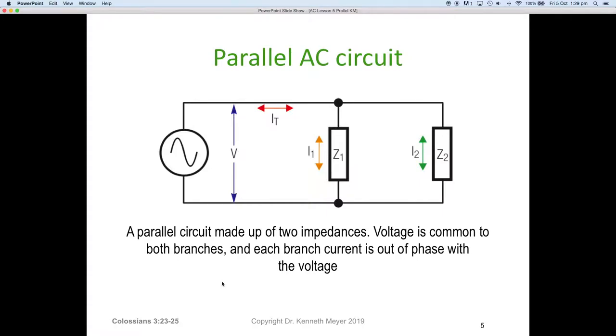Here we start with a parallel AC resistive circuit. You can see with the blue arrows, we've got the applied voltage. Then with a red arrow, we've got current total IT. And then we have two impedances, Z1 and Z2. We have a current I1 and a current I2. A parallel circuit is made up of two impedances. Voltage is common to both branches and each branch current is out of phase with the voltage. The first thing we need to remember with parallel circuits is voltage now becomes the reference. We're interested in how the currents shift in relation to each other and that reference.